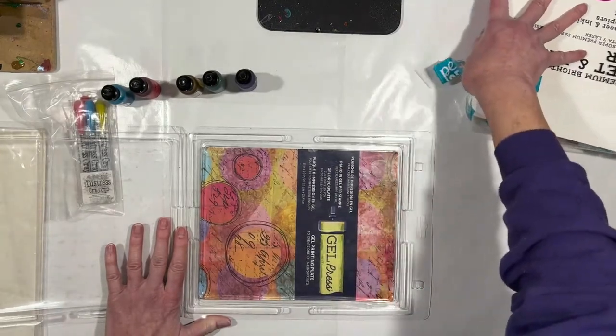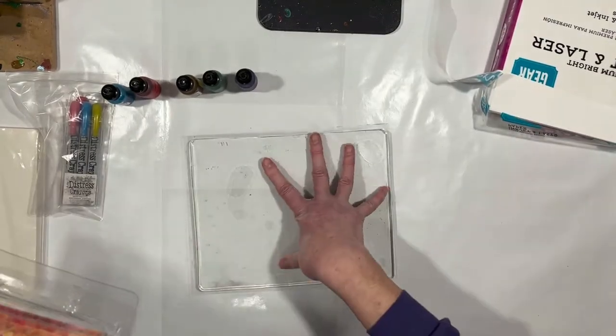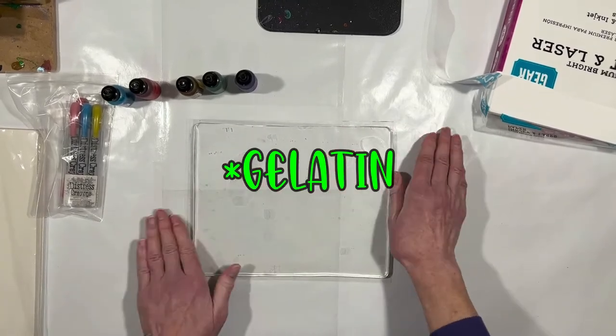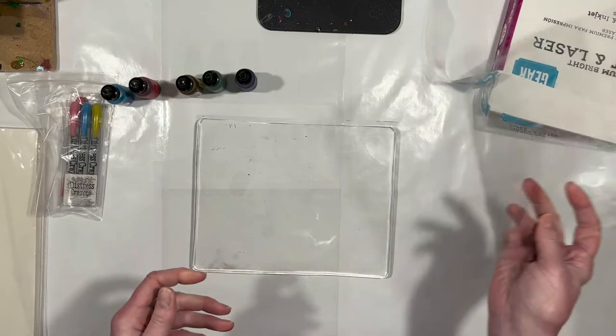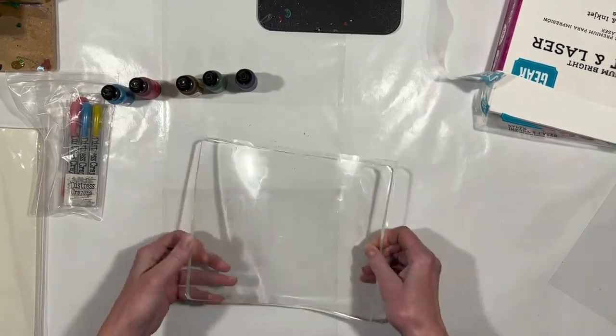This is a Gel Press brand gel plate. It's just jelly, not obviously edible like Smuckers jelly, but engineered type of jelly to be used with artist supplies. I'm going to take the top protective sheet off and put it aside. I'll leave the bottom sheet on just so it moves around.